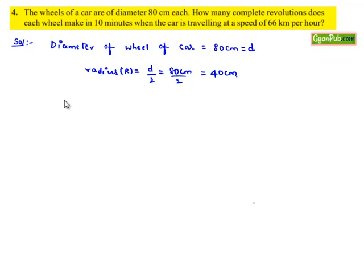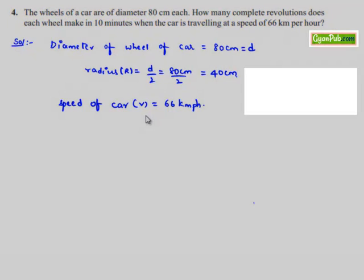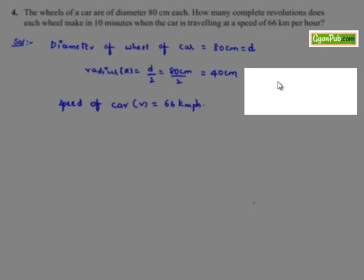The speed of the car is given as 66 kmph. Now we need to find the complete revolutions made by the wheel in 10 minutes. Here, if we consider a car wheel, it will be circular in shape. So the number of revolutions made by the wheel in the given time will be equal to the distance travelled by the car in that time.